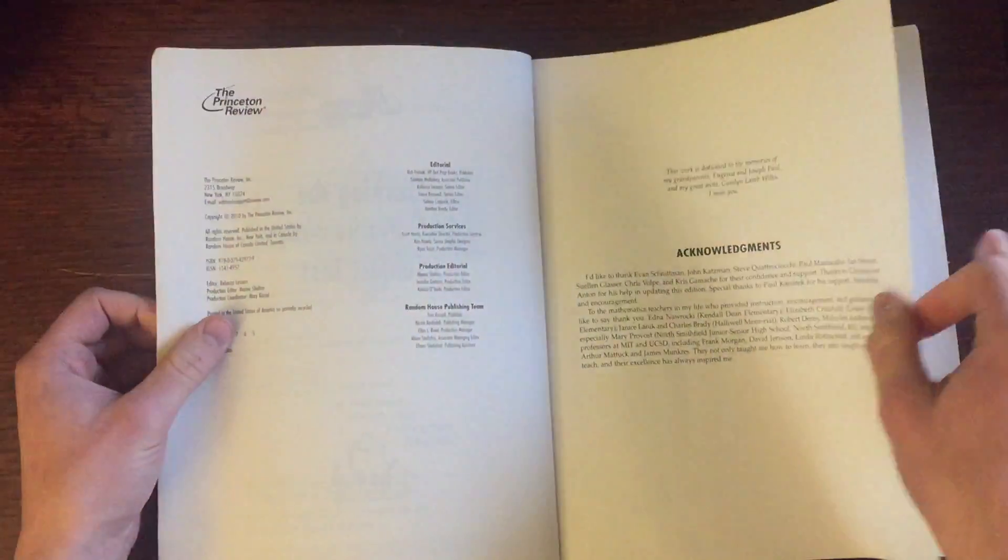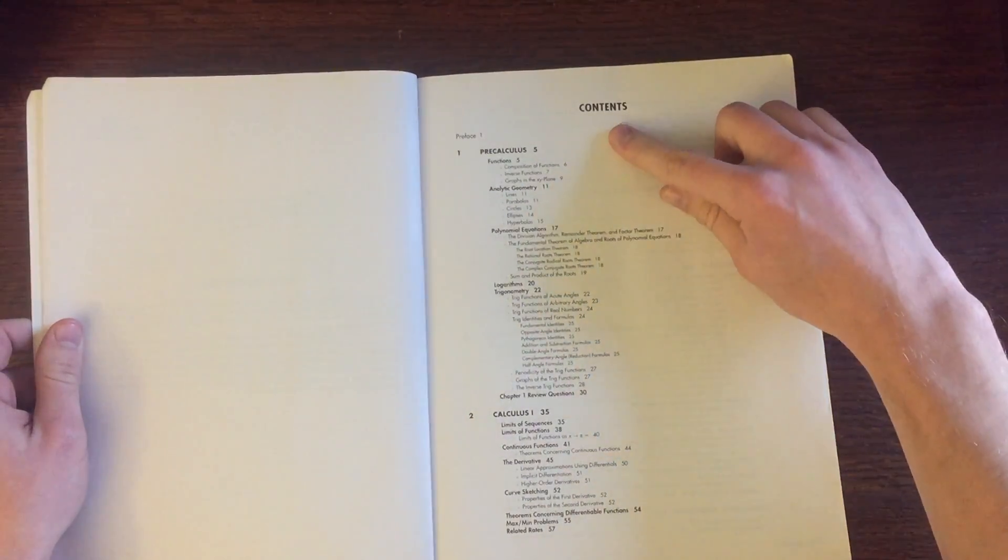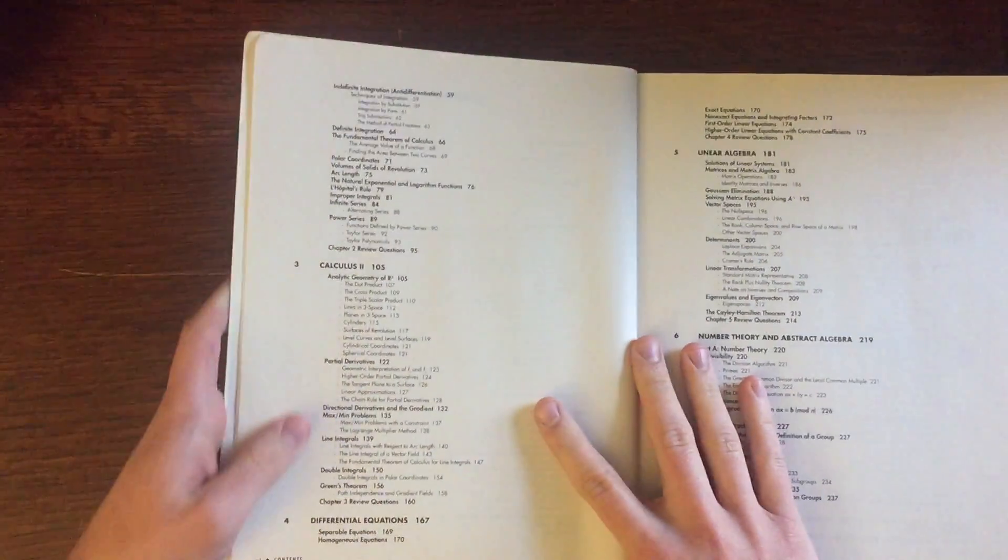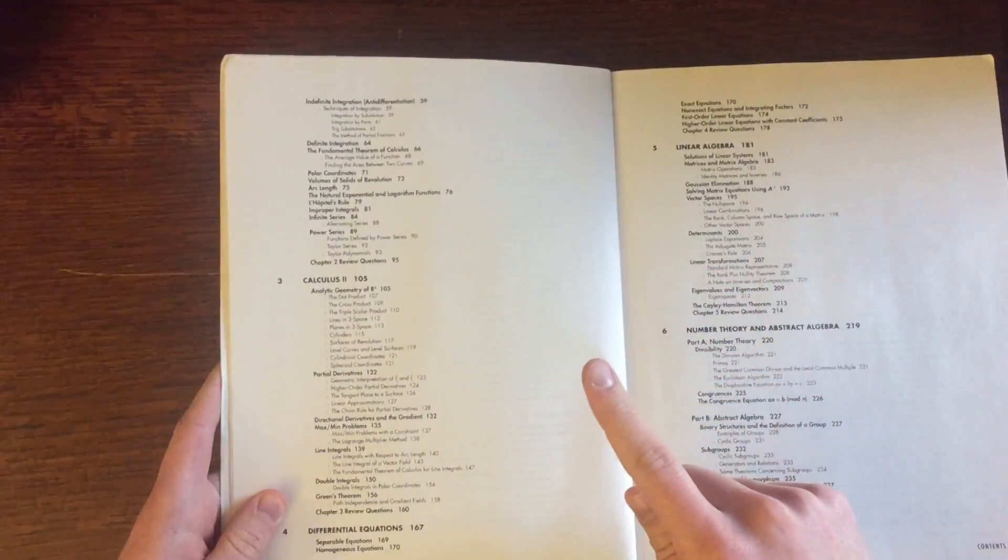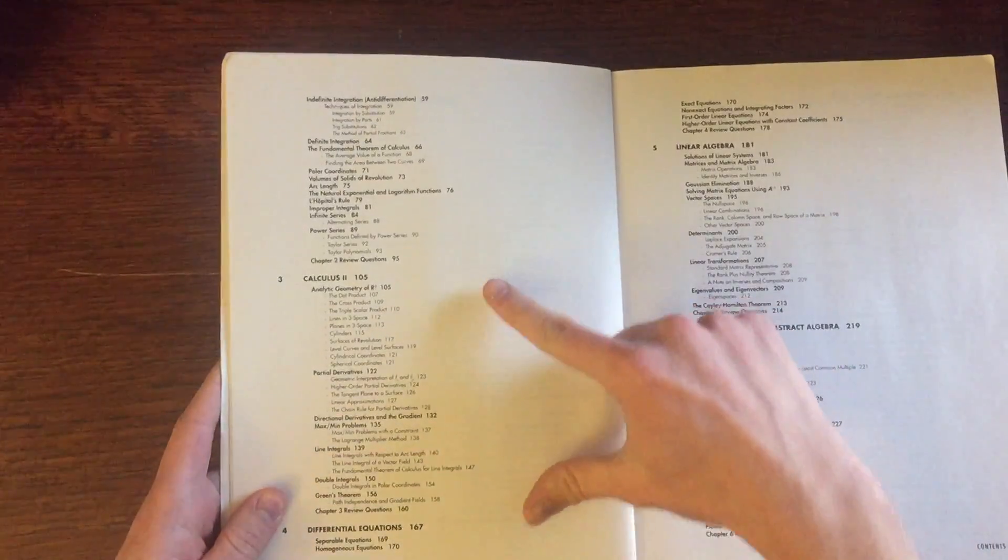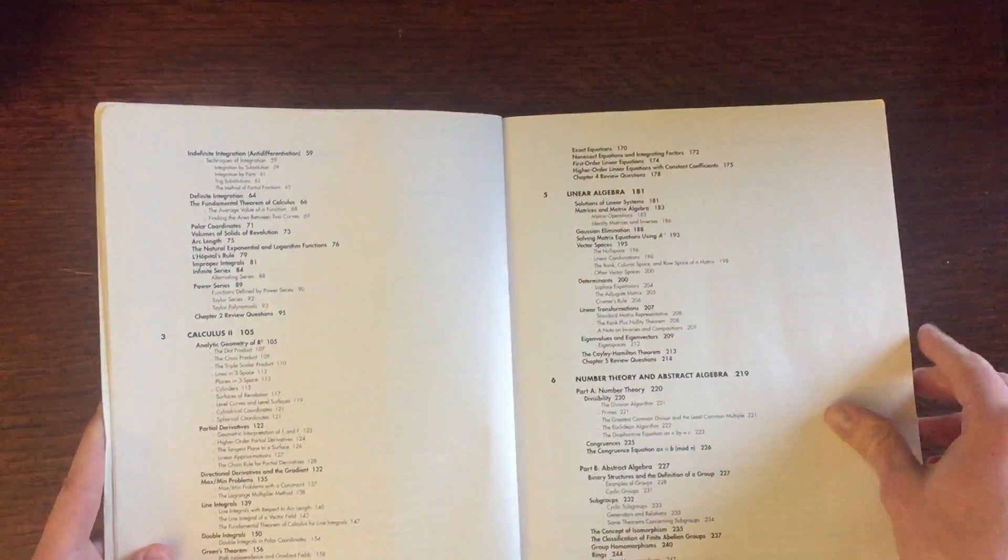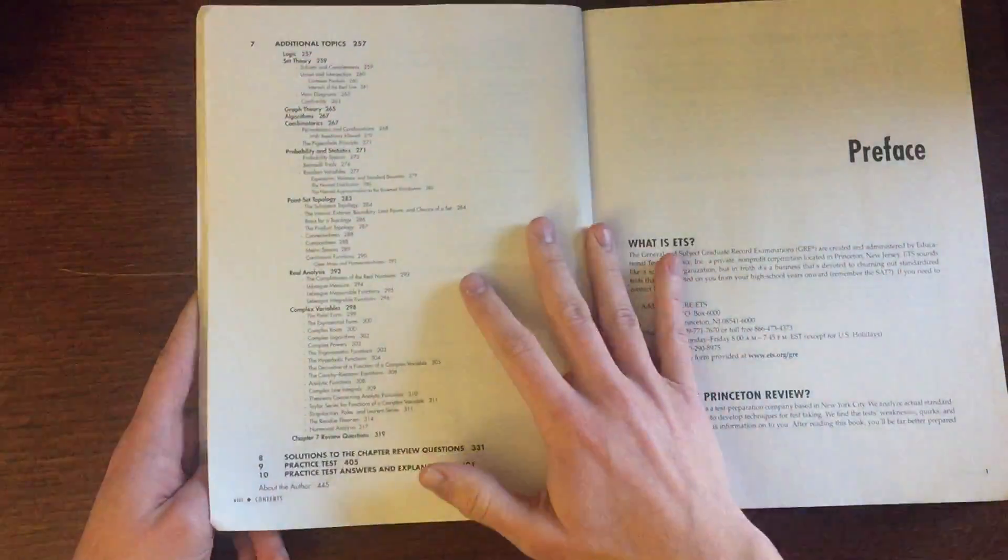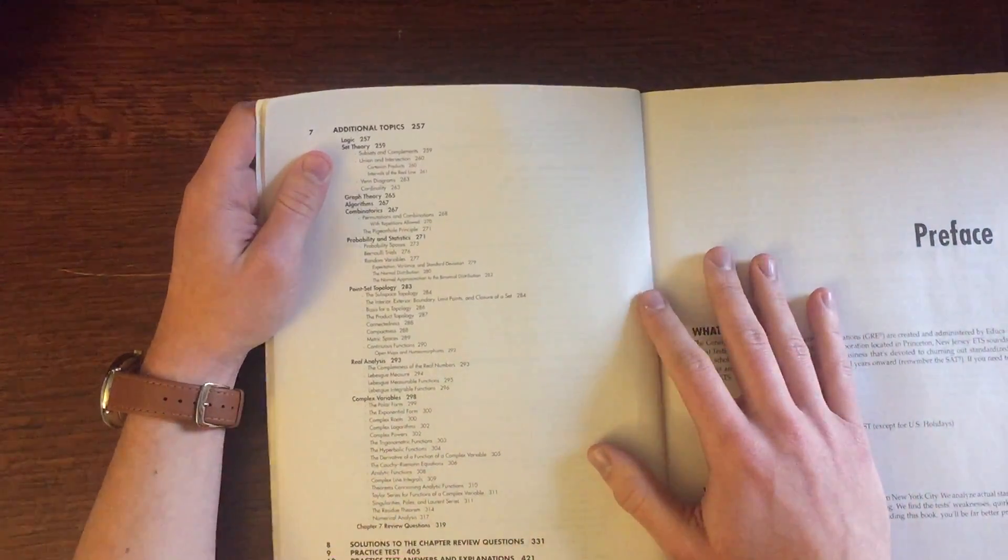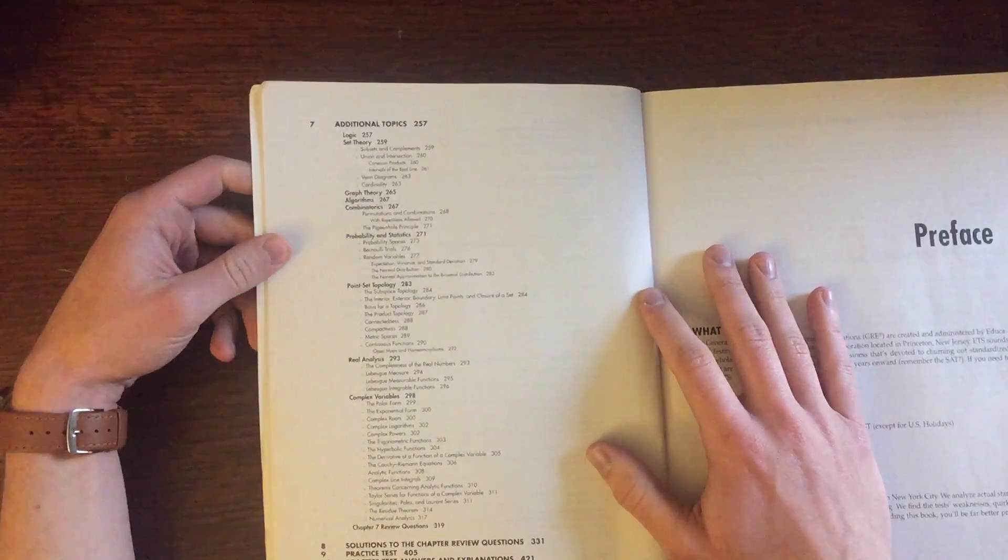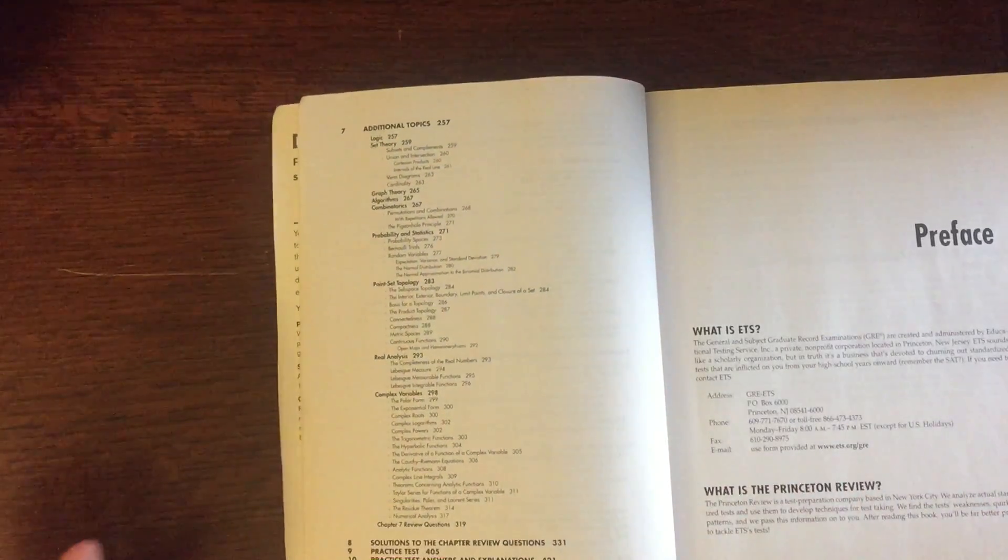If you look through this, hopefully you can see, the contents of this book is pre-calc, calc 1, calc 2, and I'll just mention that this edition, what they call calc 2, most people would call calc 2 and calc 3. Differential equations, linear algebra, number theory and abstract algebra, and then what they call additional topics, which include logic, set theory, graph theory, algorithms, combinatorics, probability statistics, point set topology, real analysis, complex variables.